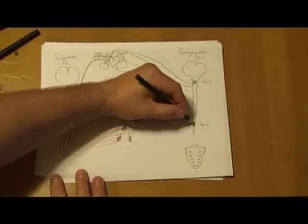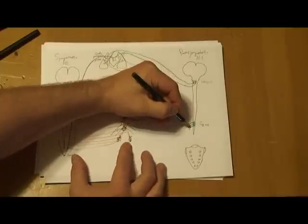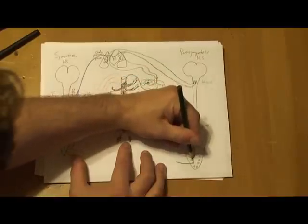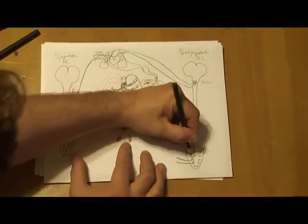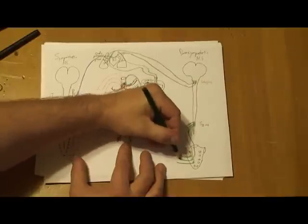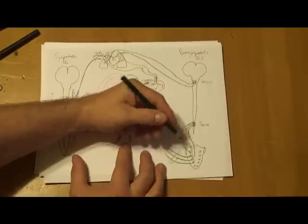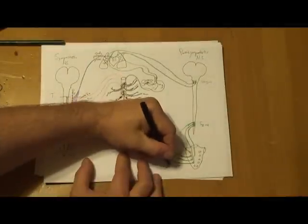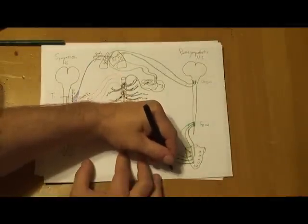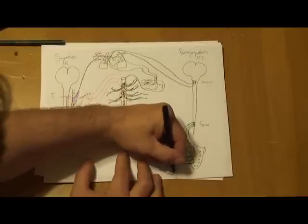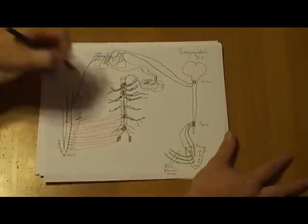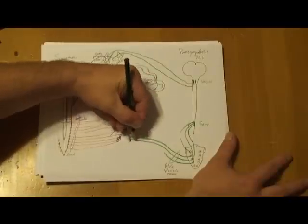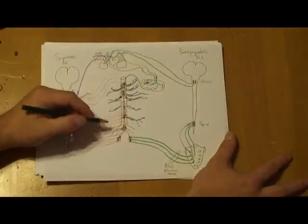Instead, the S2, 3, and 4 parasympathetics travel with the anterior rami of the sacral nerves, pass out the anterior sacral foramina, and then peel off those nerves. And as they do that, they are then referred to as pelvic splanchnic nerves. These are very low in the abdomen, and in fact run directly into the inferior hypogastric plexus on each side.